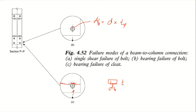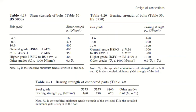For shear strength values from clause 4.19 and Table 30 of BS 5950: bolt grades 4.6, 8.8, and 10.9 each have a corresponding shear strength ps. For bearing strength of the bolt, use the corresponding values for each bolt grade. For bearing strength of the connecting parts (UC or UB), values depend on steel grade — 275, 355, 460, etc.